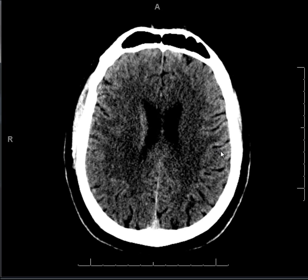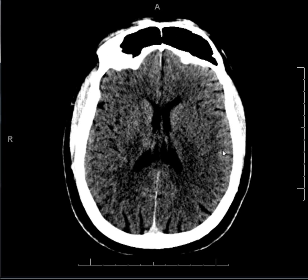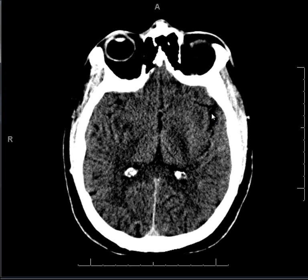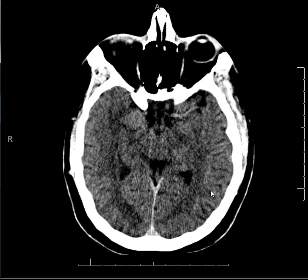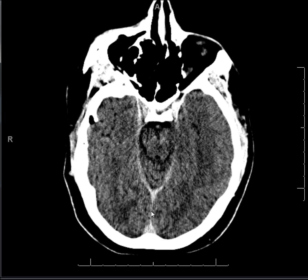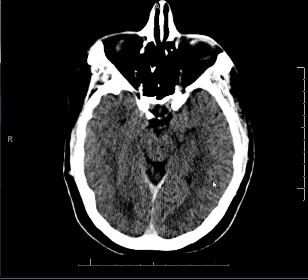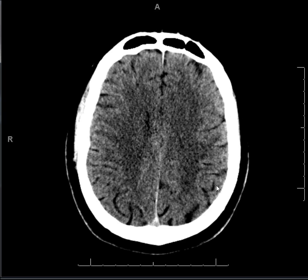Certain areas are more prone for this differentiation to be lost. For example, the sub-insular cortex — you see the gray matter and the white matter — and this is often lost in middle cerebral artery infarcts. So in the setting of infarct, this is a very important area to evaluate. You should confirm that the gray-white matter differentiation is noted throughout the brain parenchyma.